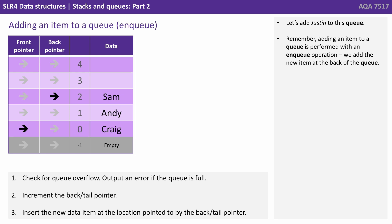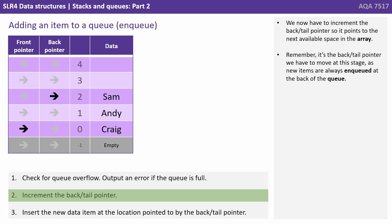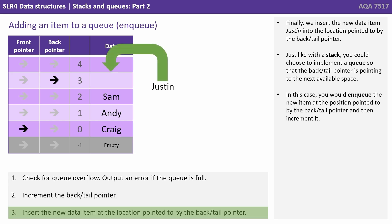Now let's add Justin to the queue data structure. Remember, adding an item to a queue is performed with an enqueue operation — we add the new item at the back of the queue. As with a stack, we should begin by checking that the queue is not already full; if it is, stop and report an error. We then increment the back or tail pointer so it points to the next available space in the array. Remember, it's the back or tail pointer we move, as new items are always enqueued at the back. Finally, we insert the new item, Justin, into the location pointed to by the back or tail pointer. Just like with a stack, we could implement the queue so the tail pointer points to the next available space, in which case we enqueue first and then increment.